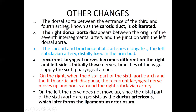The dorsal aorta between the entrance of the third and the fourth arch is known as the carotid duct. The right dorsal aorta disappears between the origin of the seventh intersegmental artery. In junction with the left dorsal aorta, the right dorsal aorta — for the carotid and the brachiocephalic artery elongates — the left subclavian artery is distally fixed in the arm.